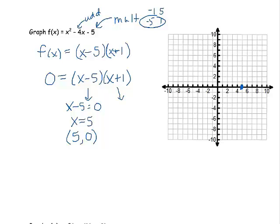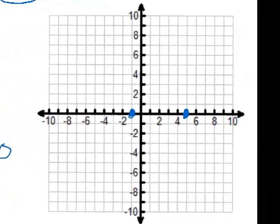Let's do it with the other factor. What if x plus 1 equaled 0? That would mean that x is negative 1. Or in other words, we have an x intercept at negative 1 comma 0. I'm going to put that on my graph as well.